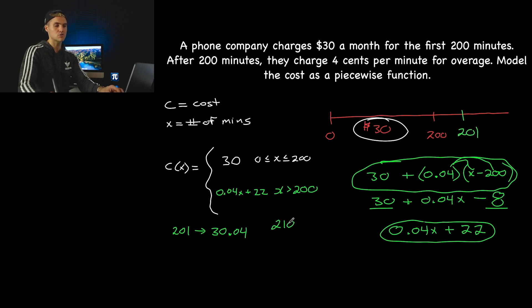If we were to plug in 210, we know we're going to get charged $30 plus 40 cents. So our charge would be $30.40. And so if I plug in 210 for the x value in this equation, 0.04 times x would give us 8.4, $8.40 plus the 22 would give us that charge of $30.40.